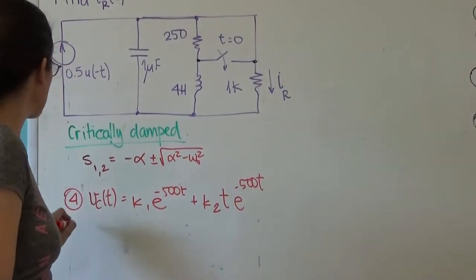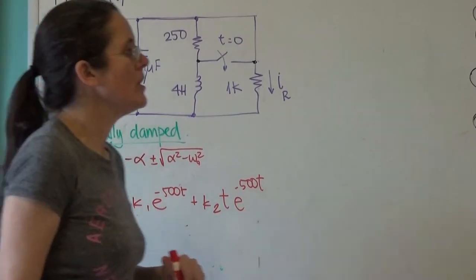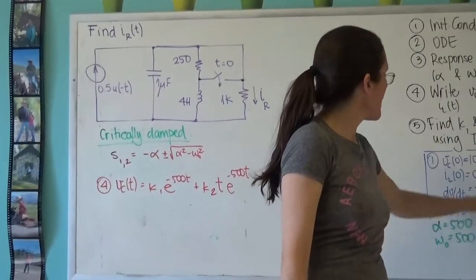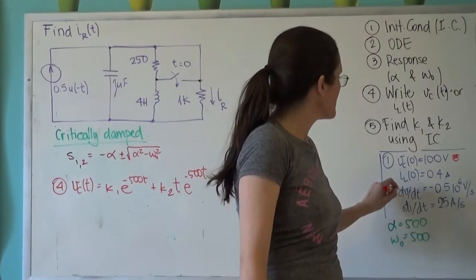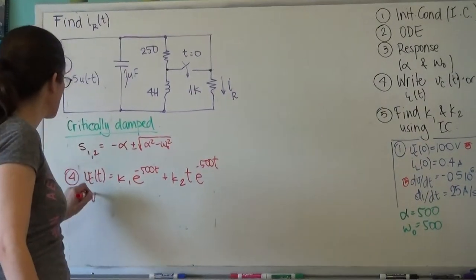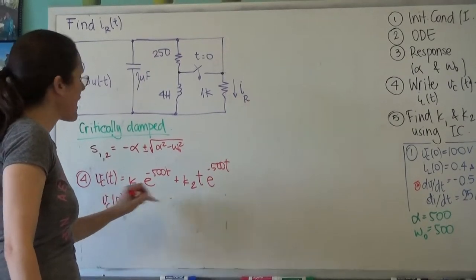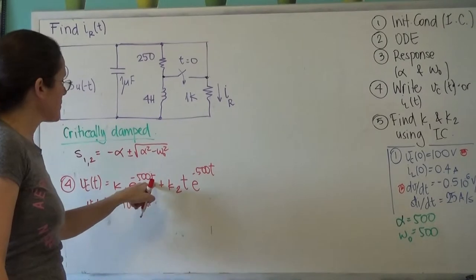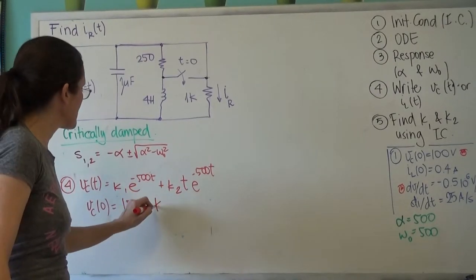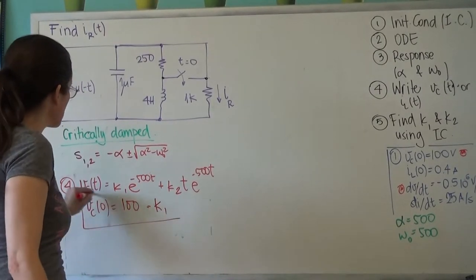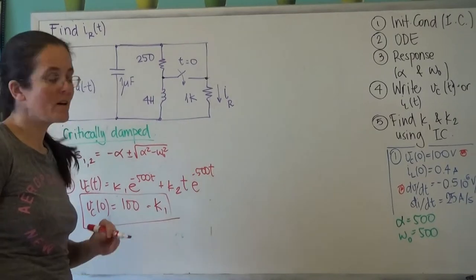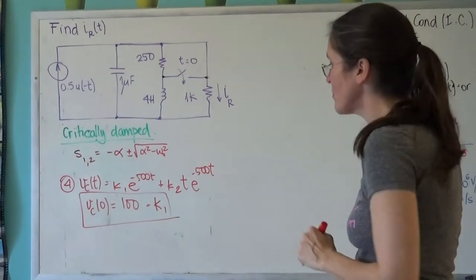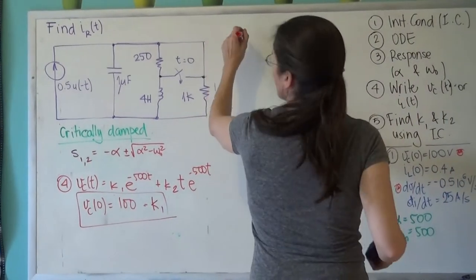Maybe we can already find k1 and k2 using the initial conditions. Given that I have the voltage on the capacitor, I'm going to use these two initial conditions. Vc(0) equals 100 volts, and if I substitute t = 0 into the expression, this gives me just k1. So basically k1 equals 100.